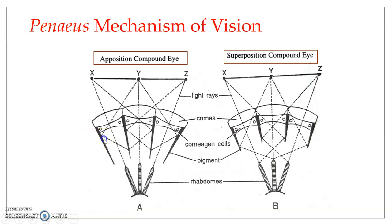One type is the apposition compound eye, or apposition image. This particular apposition image is formed mainly when the compound eye is exposed to bright light — for example, during daytime. When bright light enters the ommatidia, the pigment cells — represented by darker bands — stretch out or spread, and completely isolate the adjacent ommatidia.